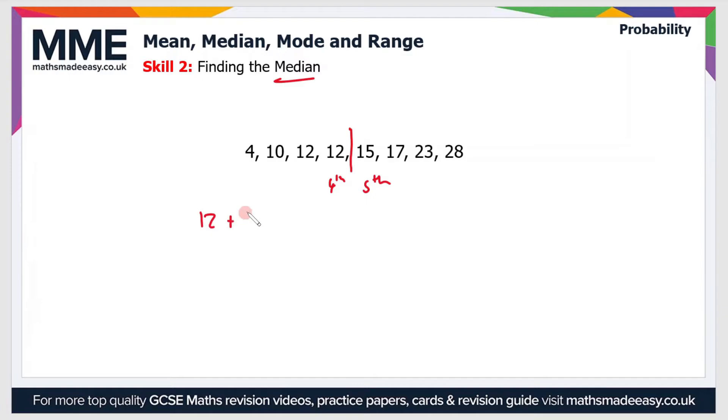So we add 12 plus 15 and we divide them by 2. So that's 27 divided by 2 and that is 13.5. So the median is 13.5.